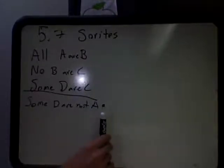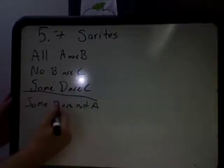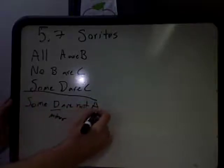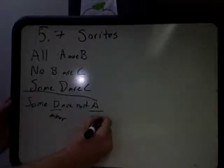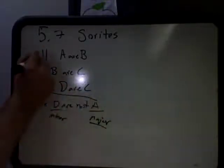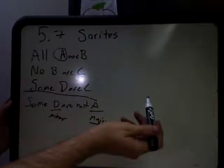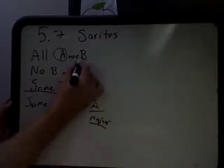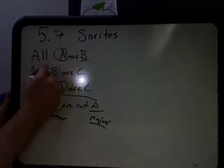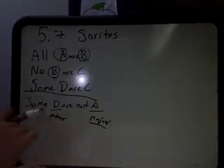Now the first thing you have to do is put the sorites in order. In this first case it's already done for you. Remember this is the minor term — the subject of the conclusion — which is the minor term. The predicate of the conclusion is considered the major term, which means the major term always has to begin first. So we have our A here. There's going to be multiple middle terms — here we have our middle term B. I'll put the middle terms in blue. So here we have All A or B and No B or C.